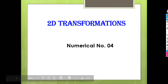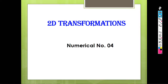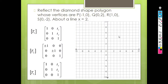Hello everyone, today we will solve one more numerical based on 2D transformation. Note down this question: reflect a diamond shape polygon whose vertices are P(-1, 0), Q(0, 2), R(1, 0), S(0, -2) about a line x = 2. A polygon is given whose vertices are given, and it has to be reflected or mirrored against the line x = 2.